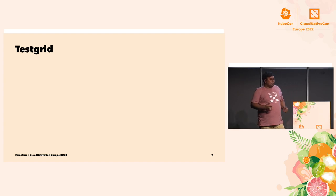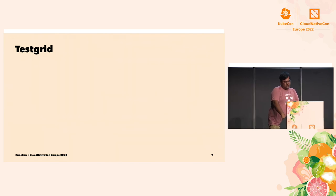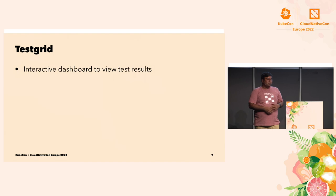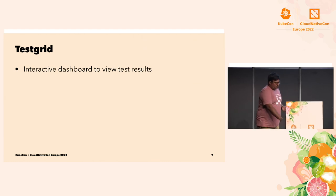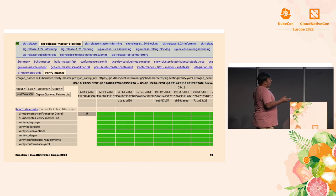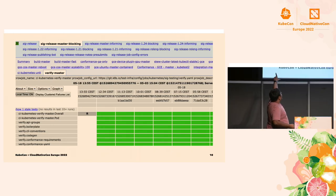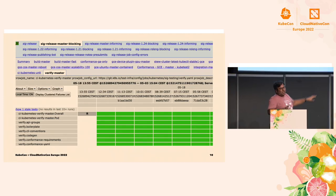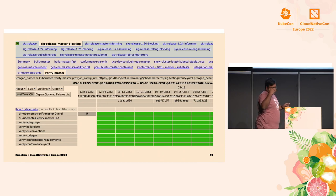Apart from Tide, the other component used in the Kubernetes community is TestGrid. The frontend is not open source but the backend is. It's an interactive dashboard to view test results shown in a grid. We're showing the SIG Release TestGrid here, where SIG Release master blocking is a group of jobs and verify-master is a specific job. You can see the status of previous runs and decipher what is failing without churning through all the logs manually.